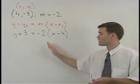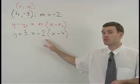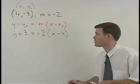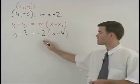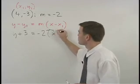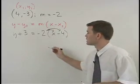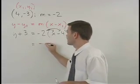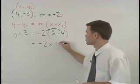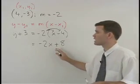Now we need to convert this equation to standard form. And our first step would be to distribute this negative 2 through the parentheses to get negative 2x plus 8 on the right side of the equation.